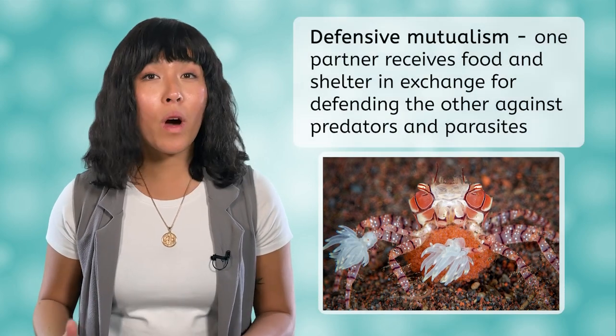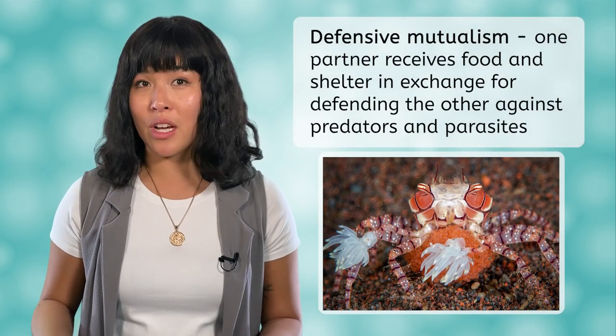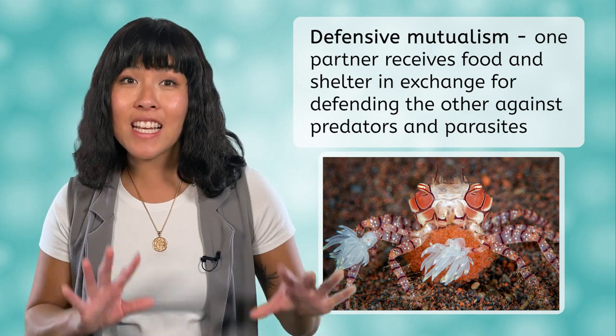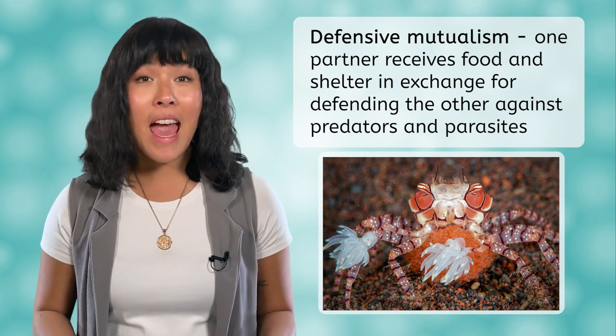Imagine being the predator of a boxer crab and when you go to attack you see it is carrying stinging anemones in its claws. Would you still attack? Chances are you would back away and find another source for dinner. This relationship between the boxer crab and the stinging anemones is an example of defensive mutualism, where one partner receives food and shelter in exchange for defending the other against predators and parasites.